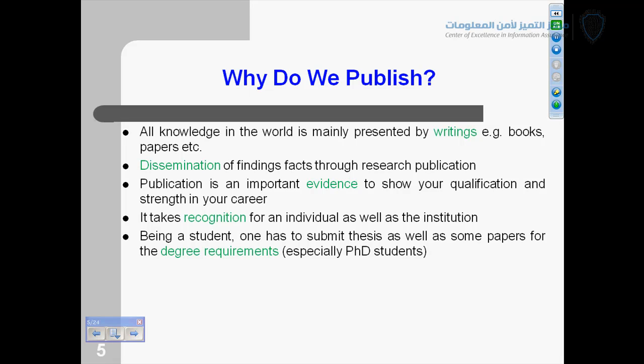Many other universities in the world have a requirement to publish papers in international journals. What is the requirement at some other universities? I think it is almost the same. Minimum one journal paper you have to publish for your PhD.